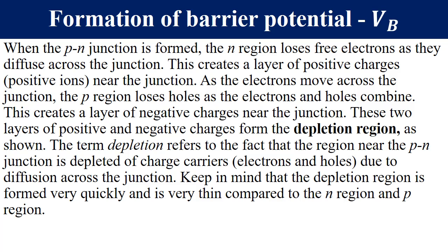The depletion simply refers to the fact that the region near the PN junction on each side is depleted of charge carriers — that is, there are no electrons and holes due to diffusion. Please take note: the depletion layer or region is formed quickly and is stopped by the formation of the barrier potential on each side of the junction.